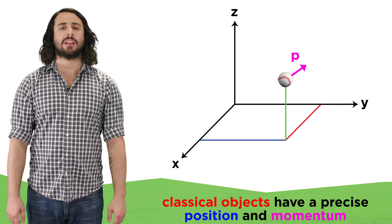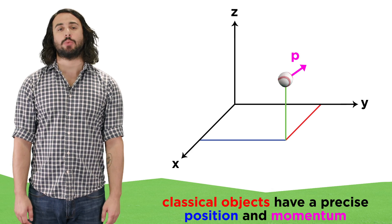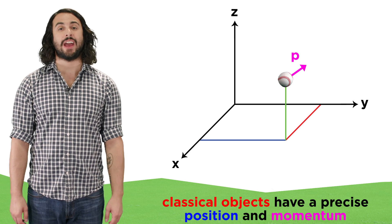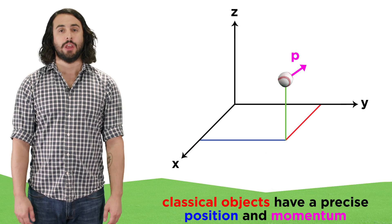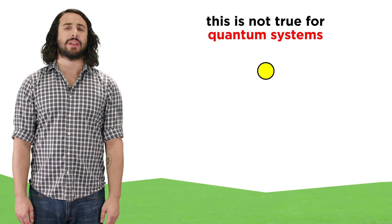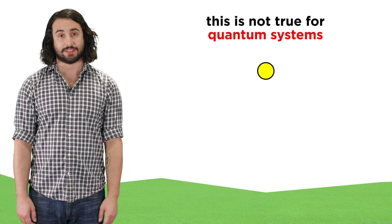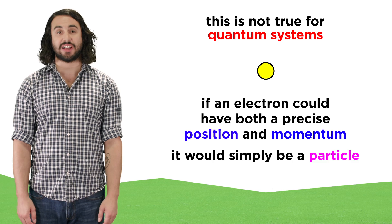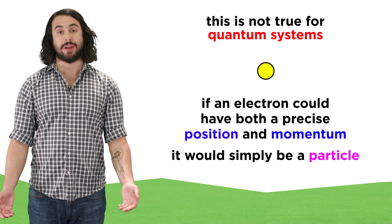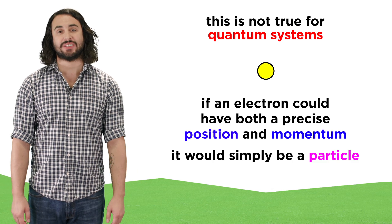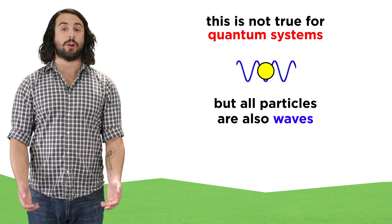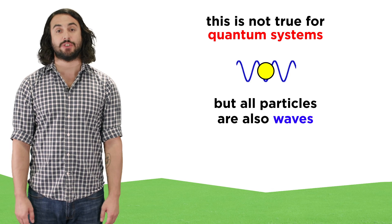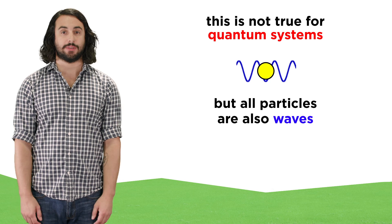In classical mechanics, an object will have a precise value for its position and momentum at all times. In quantum mechanics, this was no longer the case. If a quantum particle were to have precise values for position and momentum, it would simply be a particle, but all particles are also waves, so this kind of determinism no longer applies.